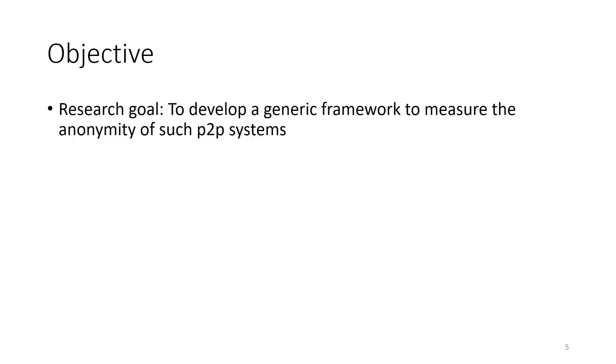One thing I forgot to mention: these schemes are inherently different, and there is no framework to know what kind of anonymity they provide. If future schemes are proposed, how can we know if they are good with respect to anonymity at the network layer? The objective of this research was to build a framework that is generic enough to quantify the anonymity of any peer-to-peer underlying scheme.